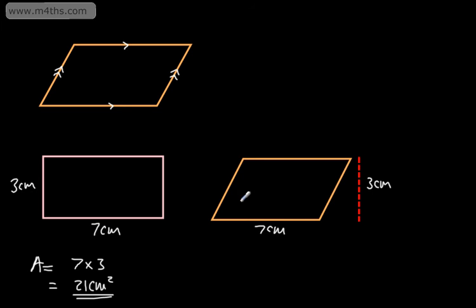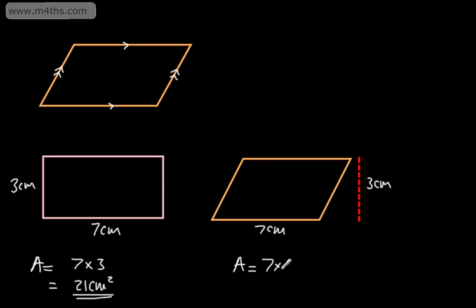With a parallelogram, we do exactly the same — we multiply the base by the straight-up perpendicular height. These two dimensions are at right angles, so if I continued that line, there would be a little right angle here. So the area is going to be seven times three, which gives twenty-one centimeters squared.